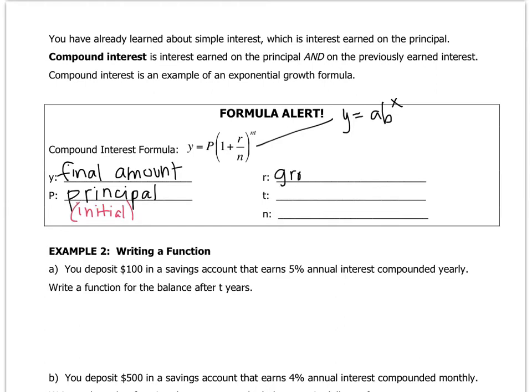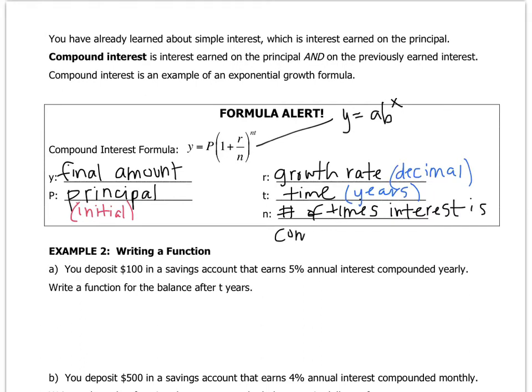R still stands for the growth rate. And don't forget, it has to be a decimal. T still stands for time. And it still has to be in years. And N stands for the number of times the interest is compounded yearly. And I'll show you two different examples of how that might impact the formula.